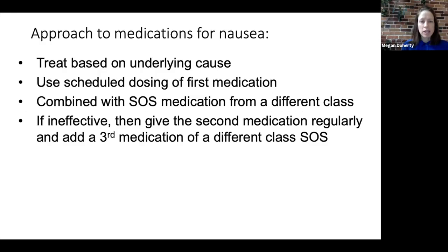In terms of the medications used to treat nausea, we should treat based on the underlying cause if we can identify it. For our first-line nausea medication, we should use it scheduled, not SOS. This should be combined with a second medication of a different class which is an SOS medication. If this strategy is ineffective, then the second medication should be given regularly as well, and a third medication of a different class should be started on an SOS basis.